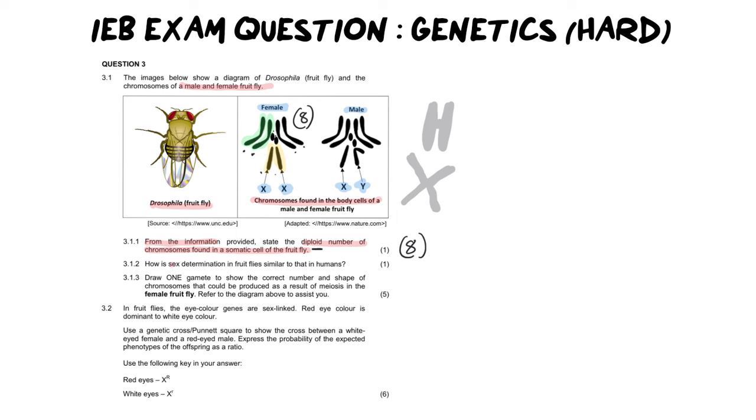Now let's get into the next question. Number two, how is sex determination in fruit flies similar to that in humans? And literally, it's only one mark. And so all we're going to mention for this one is the fact that females are XX, just like they are in humans, and males are XY, just like they are in human males. So that's all you actually need to say. For number three, it says...